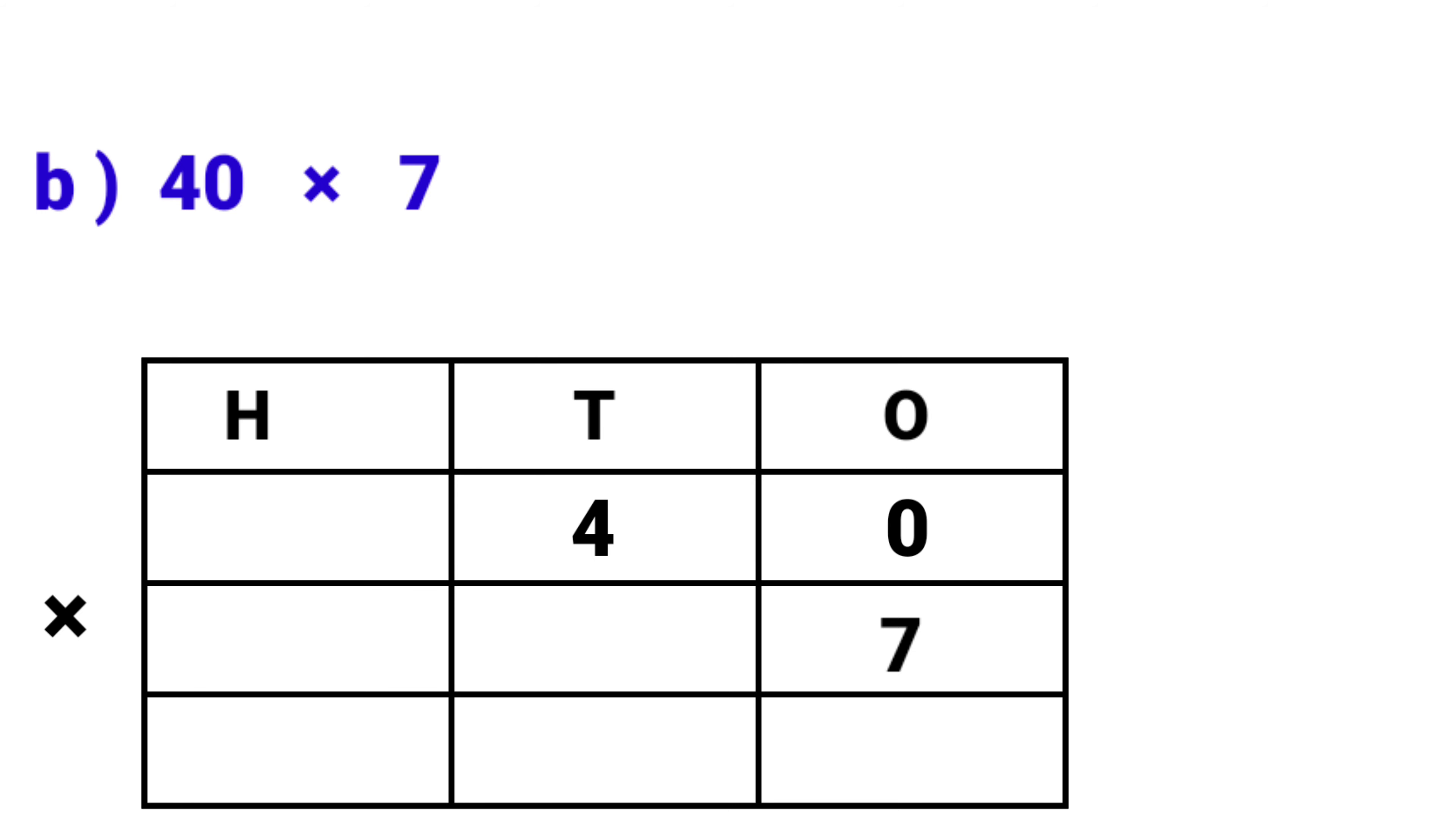Now we will see 40 cross 7. We have to multiply from 1's place: 0 cross 7. So the answer is 0. Now let us join with me. 1 7's are 7, 2 7's are 14, 3 7's are 21, 4 7's are 28. So 4 7's are 28. So the answer is 40 cross 7 is equal to 280. 280 is your product.